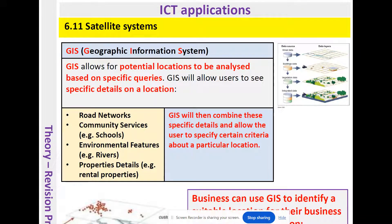We're also going to be looking at Geographic Information Systems, GIS. GIS allows a potential location to be analyzed based on specific queries. It allows users to see specific details about a location. For example, if you're looking to open up a business, you might want to know about road networks — is it accessible for suppliers and customers?